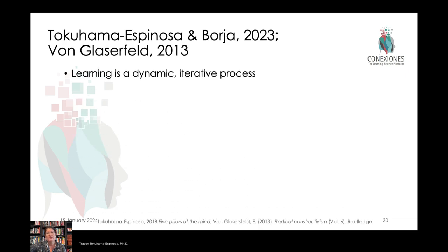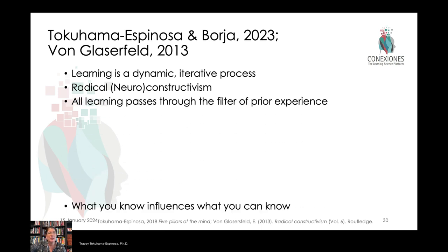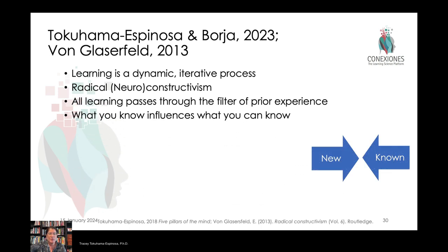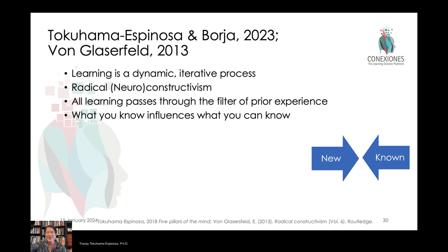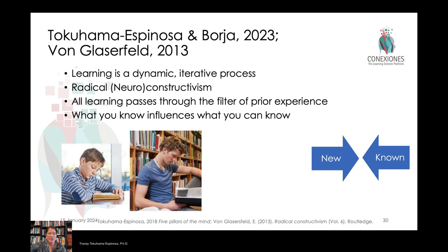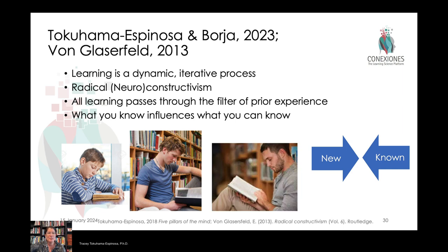The most recent work we've been focused on has to do with radical neuroconstructivism — how people build off of personal relationships with one another and change their own understanding of information once they have those exchanges. For example, if you read Romeo and Juliet when you were 12, then again at 20, then again at 35, the book is the same — but because you've had different life experiences, you interpret it differently. Similarly, the minute you explain your ideas with other people, one plus one is three: you'll have a different type of understanding once you have that social exchange.